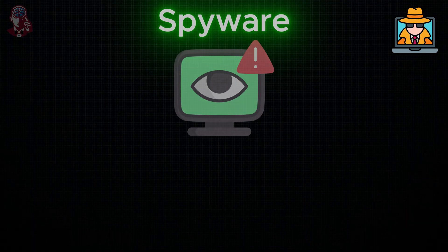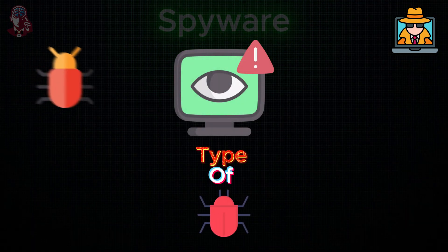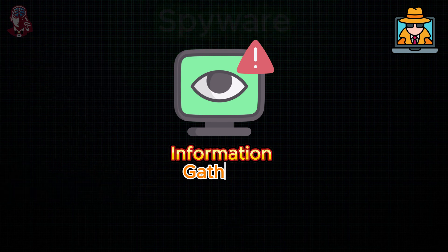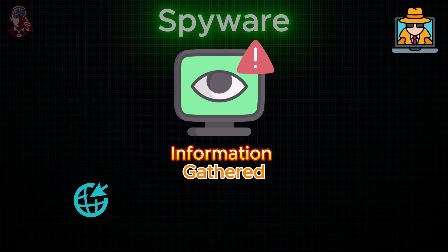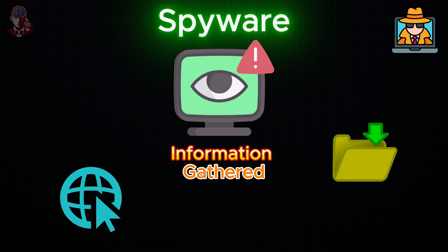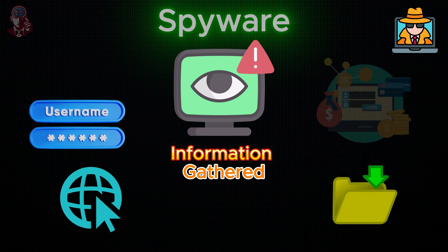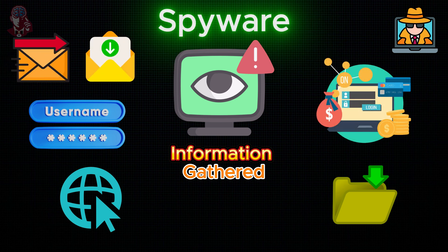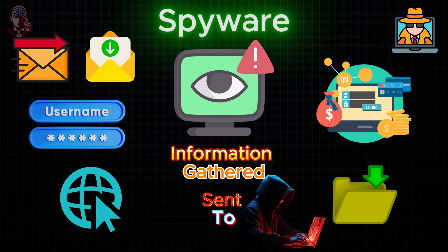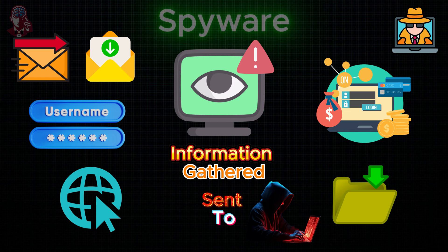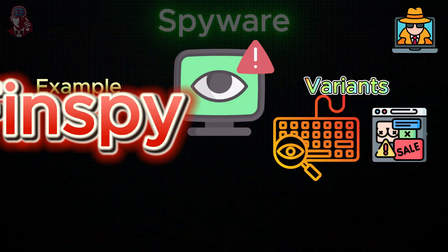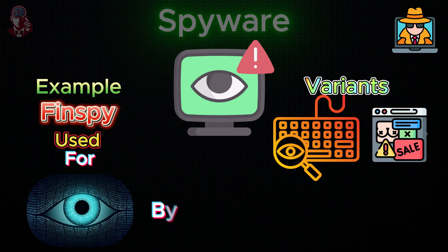Spyware: Spyware is a type of malware that infects your computer and secretly collects personal information, including websites you visit, files you download, usernames and passwords, payment information, and emails you send and receive. After collecting the data, it is typically sent to a cybercriminal who may sell it or use it for malicious purposes. Variants include keyloggers and adware. Example: Finspy, used for covert surveillance by governments.